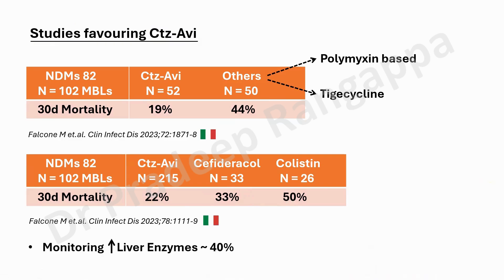The same Italian group, Falcone et al., also compared ceftazidime-avibactam with cefiderocol and colistin: 215 patients in the ceftazidime-avibactam group, 33 in cefiderocol, and 26 in colistin. Thirty-day mortality was significantly lower with ceftazidime-avibactam at 22%, versus 33% for cefiderocol and 50% for colistin. These two studies clearly show the superiority of ceftazidime-avibactam in NDM/MBL infections. When using ceftazidime-avibactam, please monitor liver enzymes — about 40% of patients show some elevation.